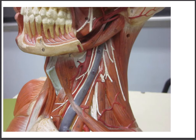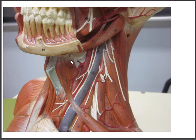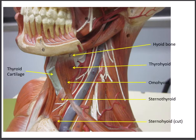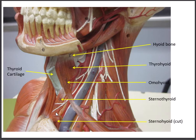The next muscle right underneath is the sternothyroid. It starts on the sternum and goes up to the thyroid cartilage — named based on what it attaches to, going from the sternum up to the thyroid cartilage. The fourth muscle, the thyrohyoid, goes from the thyroid cartilage up to the hyoid bone. So the labeled muscles are: omohyoid going toward the shoulder, sternohyoid running superficially up to the hyoid, sternothyroid from the sternum to the thyroid cartilage, and thyrohyoid from the thyroid cartilage up to the hyoid bone.